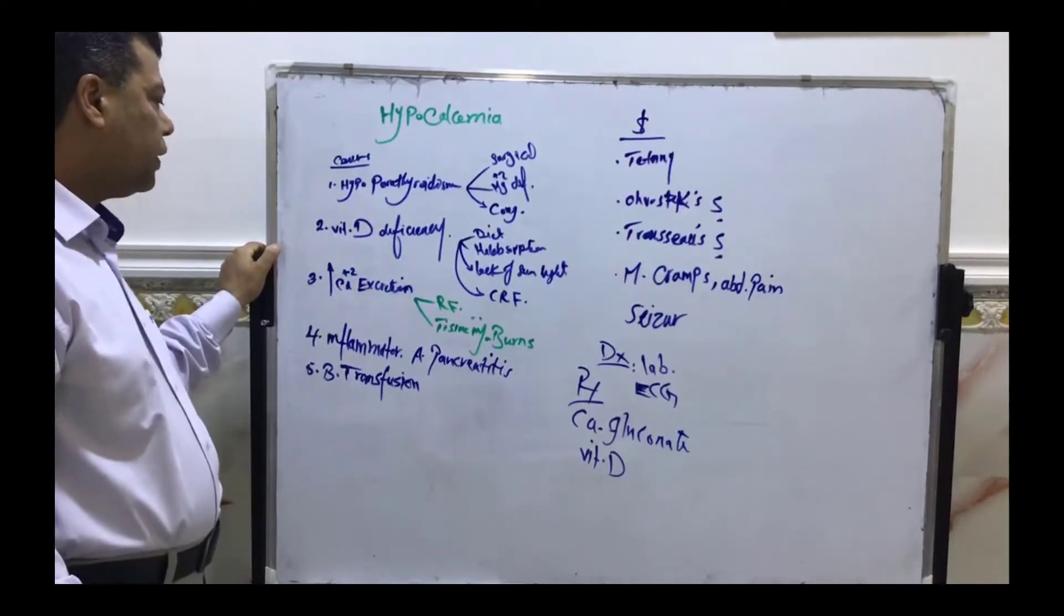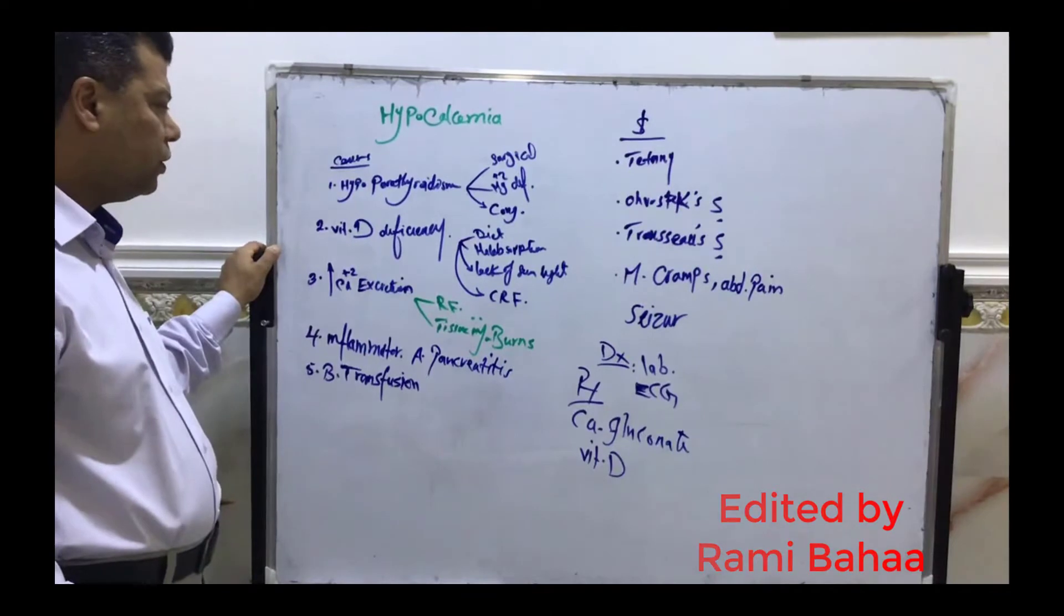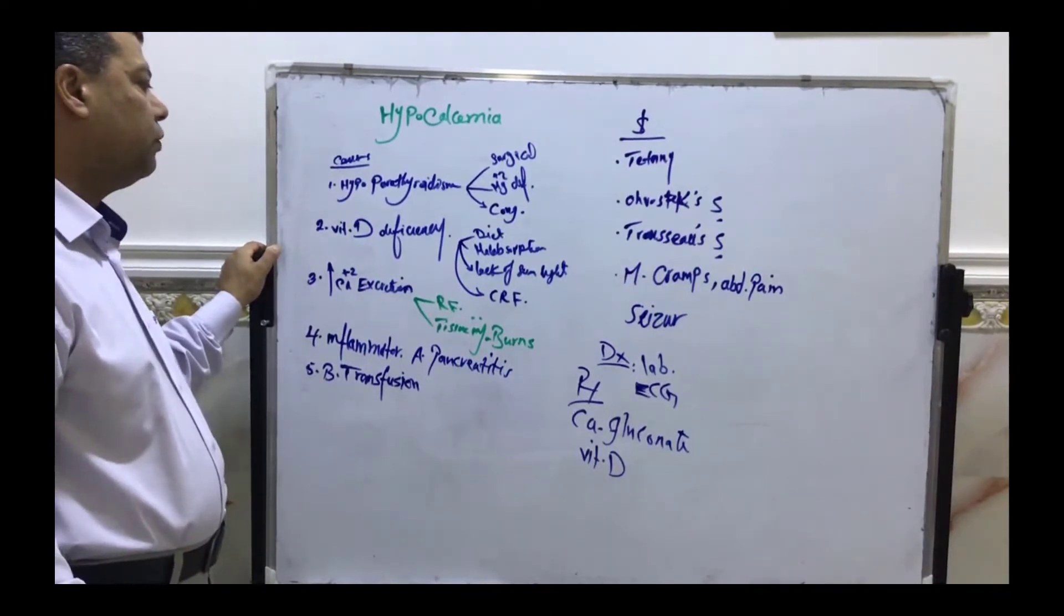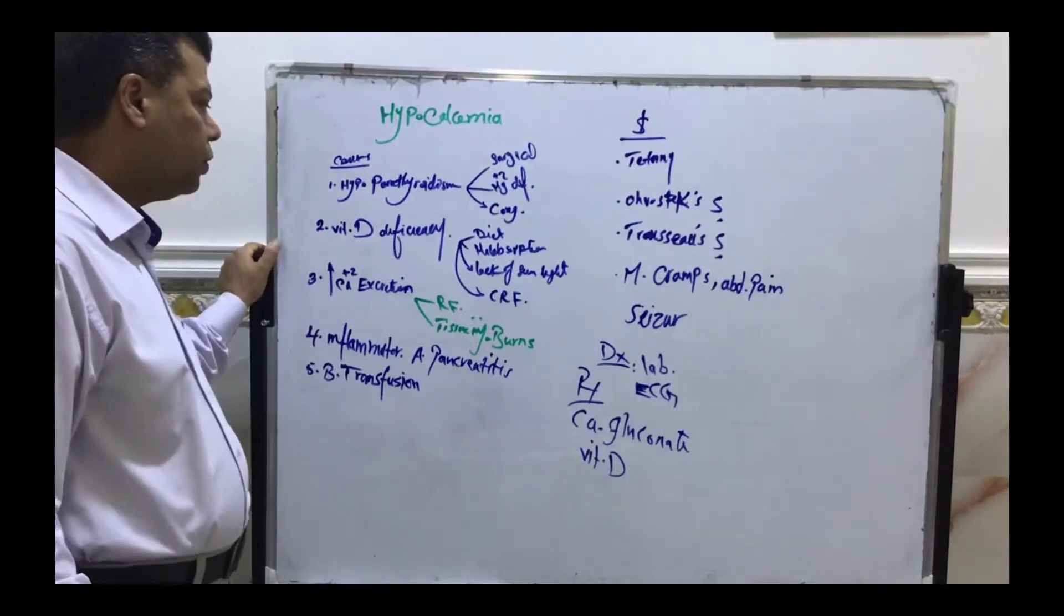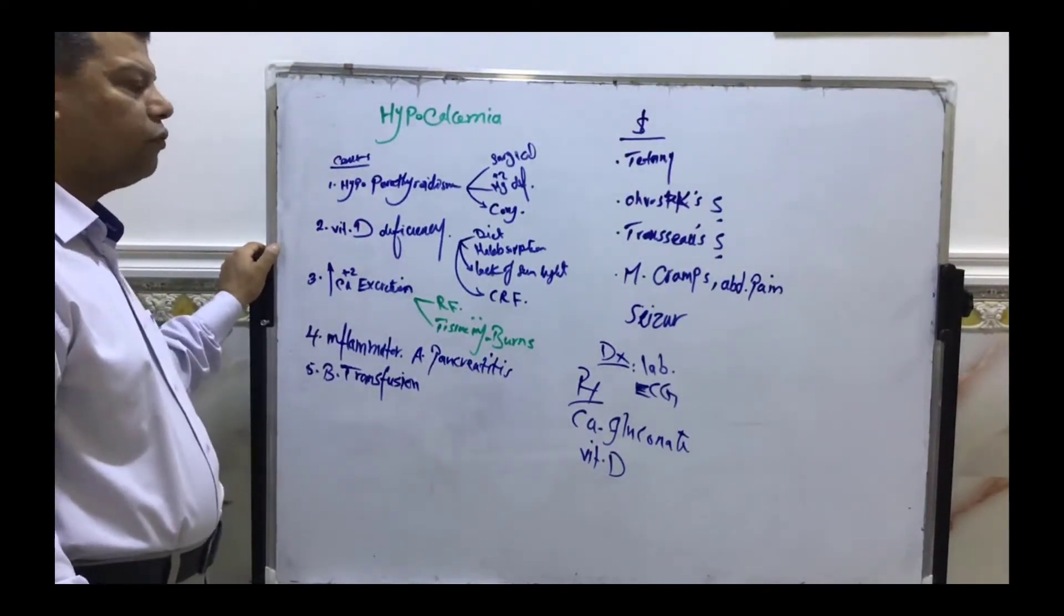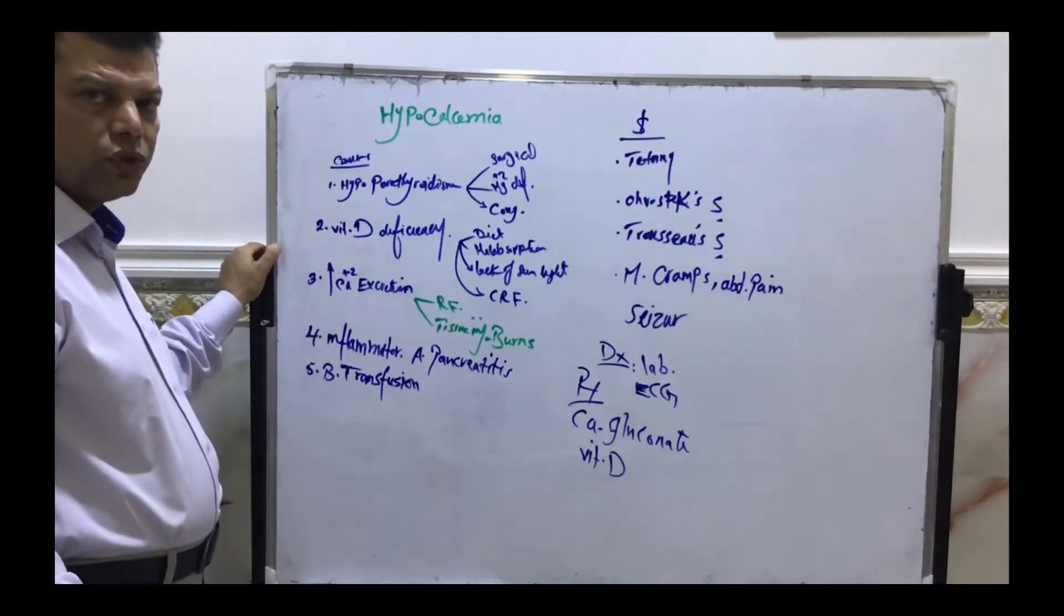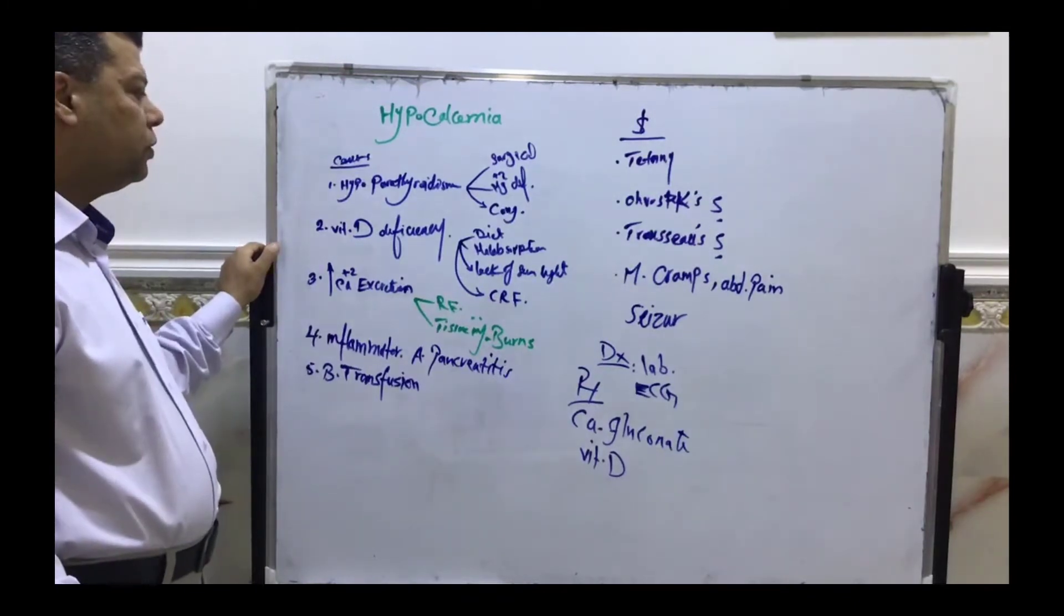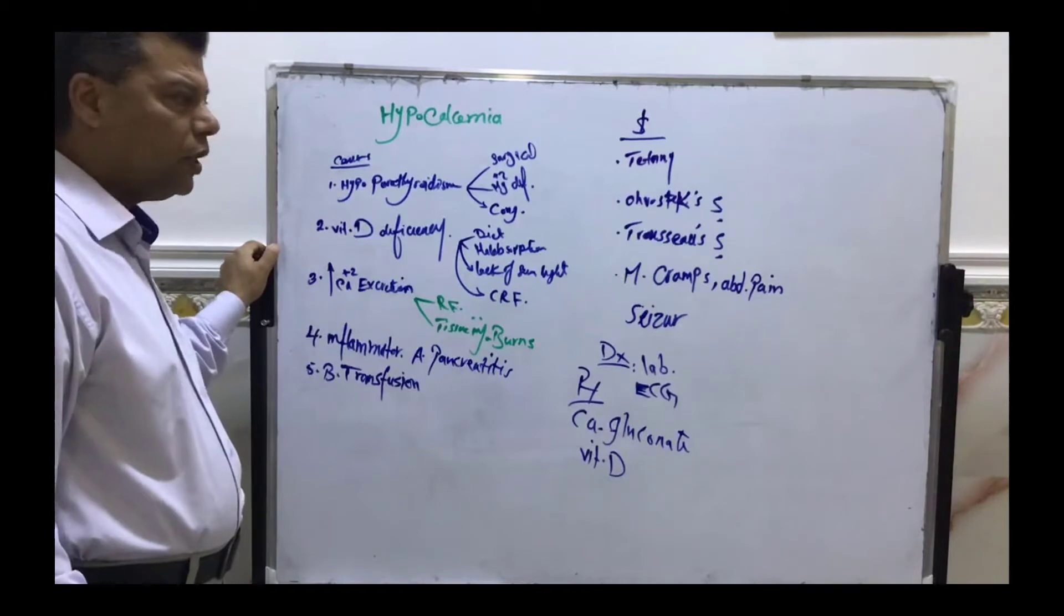Third cause is increased calcium excretion through the renal route, or in case of tissue injury with excessive secretion due to destruction of cells, such as in rhabdomyolysis.